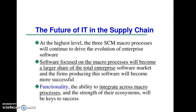At the highest level, these three macro processes will continue to drive the evolution of enterprise software. That means the development and growth of enterprise software will mainly focus on these three macro processes. Software focused on these macro processes will become a large share of the total enterprise software market, and firms like SAP, Microsoft, and Oracle started developing software for supply chain management and were very successful, earning a lot of profit.